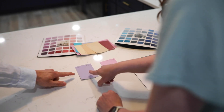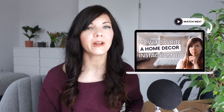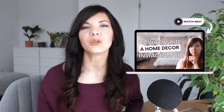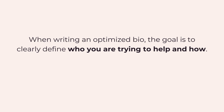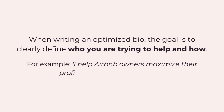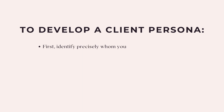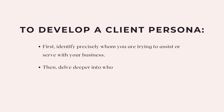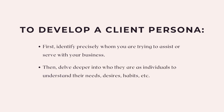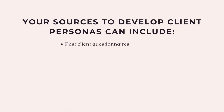It's a bit like writing your Instagram bio — when writing an optimized bio, you're trying to narrow down exactly who you are helping and how. So if you style vacation rentals, you would say something like 'I help Airbnb owners maximize their profits through interior design.' With client personas, first you narrow down exactly who you are trying to help, then expand on who they are as a person to get a picture of their needs, wishes, and habits — anything that can help you think more like them.